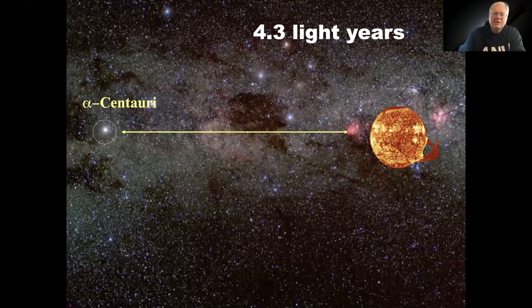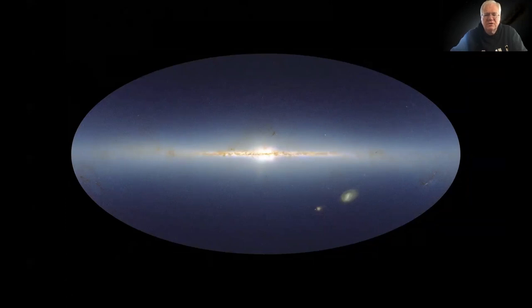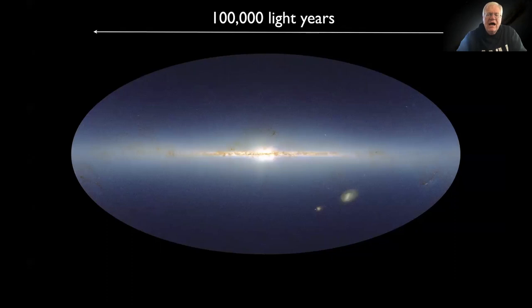It takes light 4.3 years to get to us. If we are ever thinking about traveling to Alpha Centauri, and there is a planet going around one of the stars of Alpha Centauri system called Proxima Centauri that looks a lot like the Earth potentially, the conversation would take 4.3 years just for someone to hear what I said and another 4.3 years to hear back what their answer was. You'd have to be very very patient. That's the closest star in the sky.